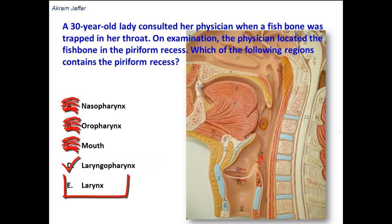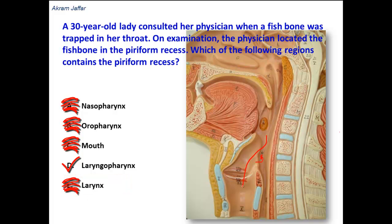Option: Larynx. There is no such recess in the larynx. If the fishbone had passed into the inlet of the larynx, it would have been aspirated into the bronchial tree. But the fishbone has stuck in the pyriform recess instead of passing down into the esophagus. This is the region of the pyriform recess. Thank you.